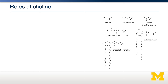Shown here on the right are some of the structures of choline and its derivatives: choline, the neurotransmitter acetylcholine, betaine — which can then go on to become S-adenosylmethionine — and glycerophosphatidylcholine, the head group, attached to either phosphatidylcholine or sphingomyelin, with lipid tails.